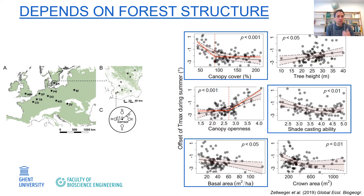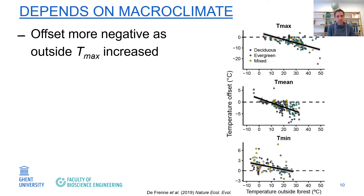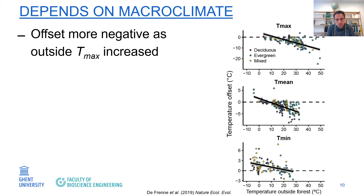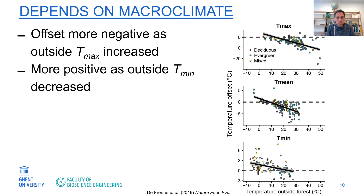If there are trees that cast more shade, the offset also becomes more negative. The second factor is the macroclimate — the temperature outside the forest. Separated into maximum, mean, and minimum temperatures: the offset becomes more negative when outside maximum temperatures are very hot and increase. And the offset becomes more positive when the outside temperature is colder — so it becomes warmer inside the forest when it is very cold outside.